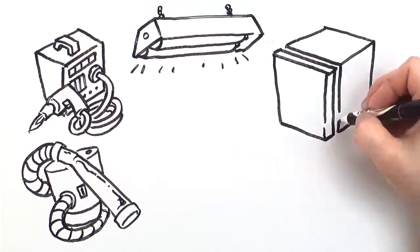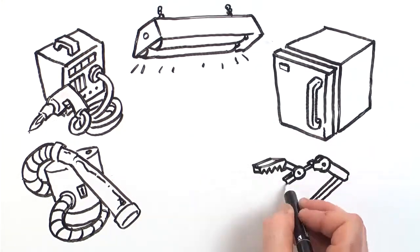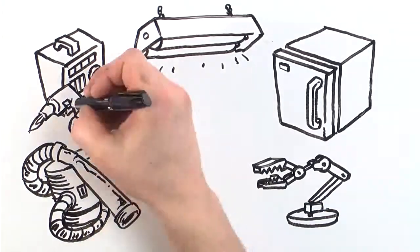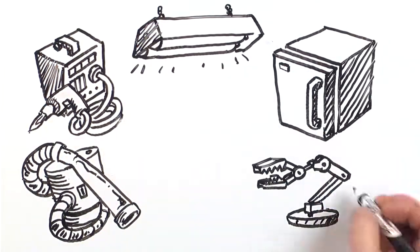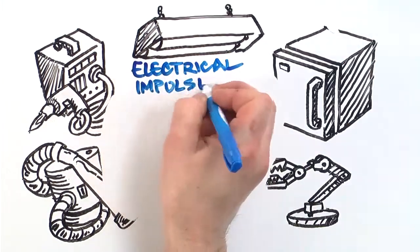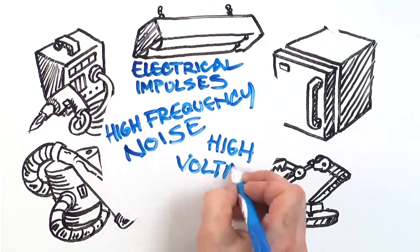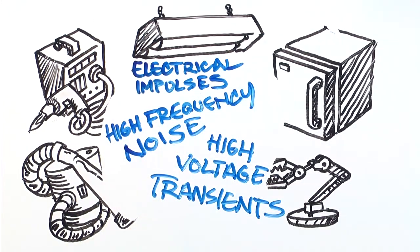Like welders, vacuums, pumps, robotics, electronic ballasts, even HVAC systems and other machinery, things that they have running every single day, all the time. These result in electrical impulses, high frequency noise and high voltage transients, all of which affect the operation of your equipment.